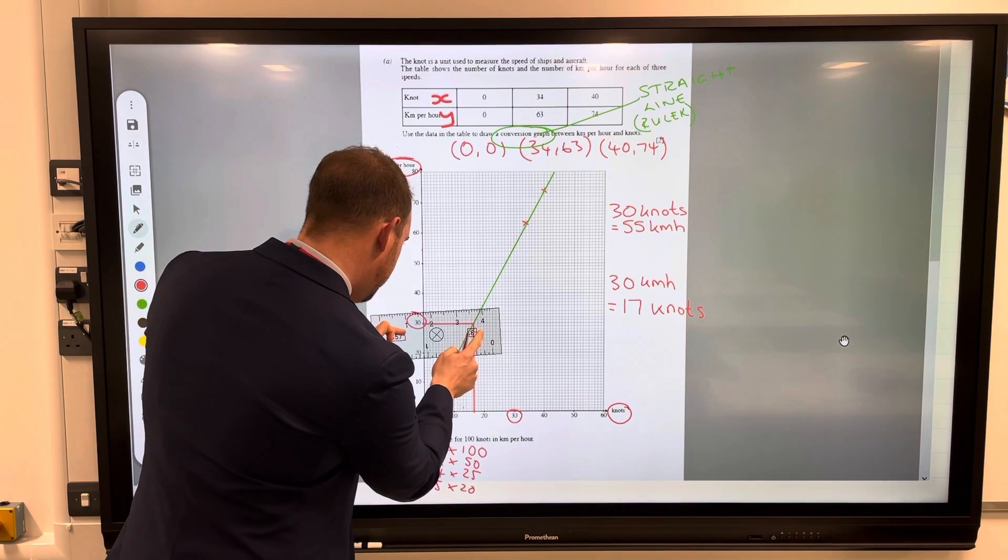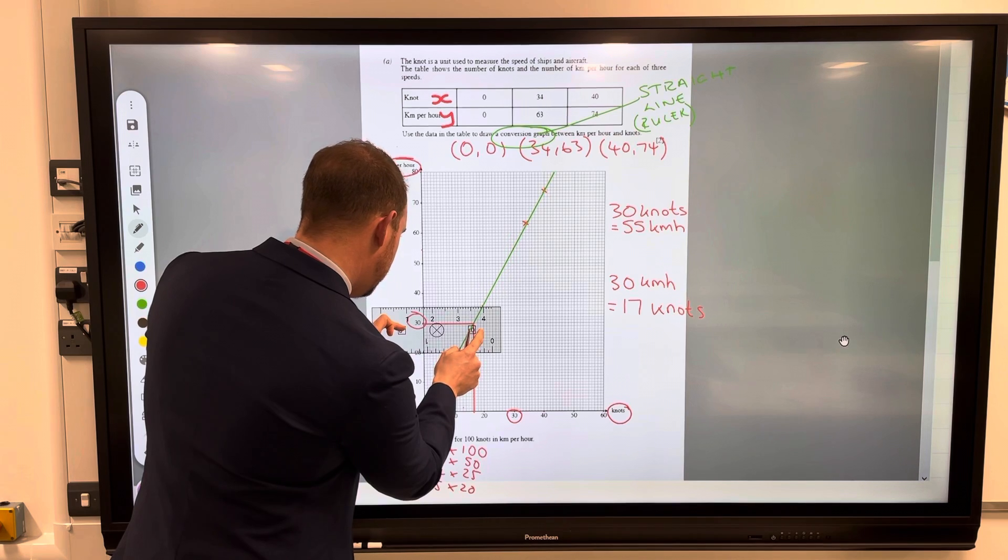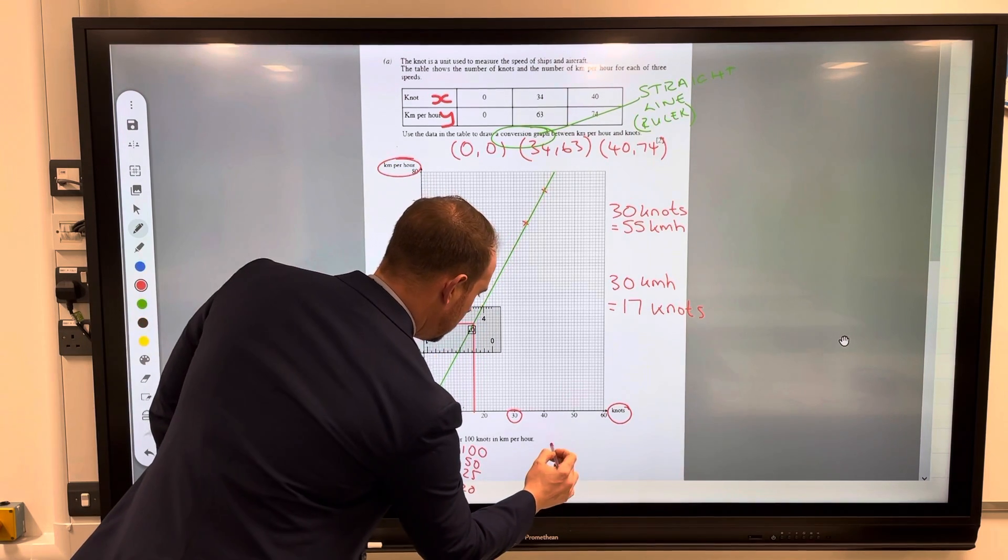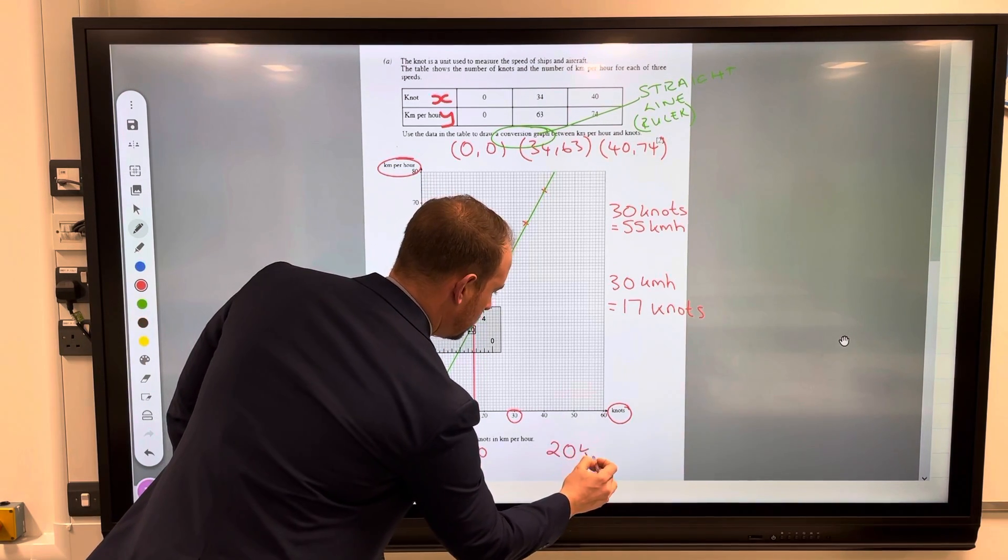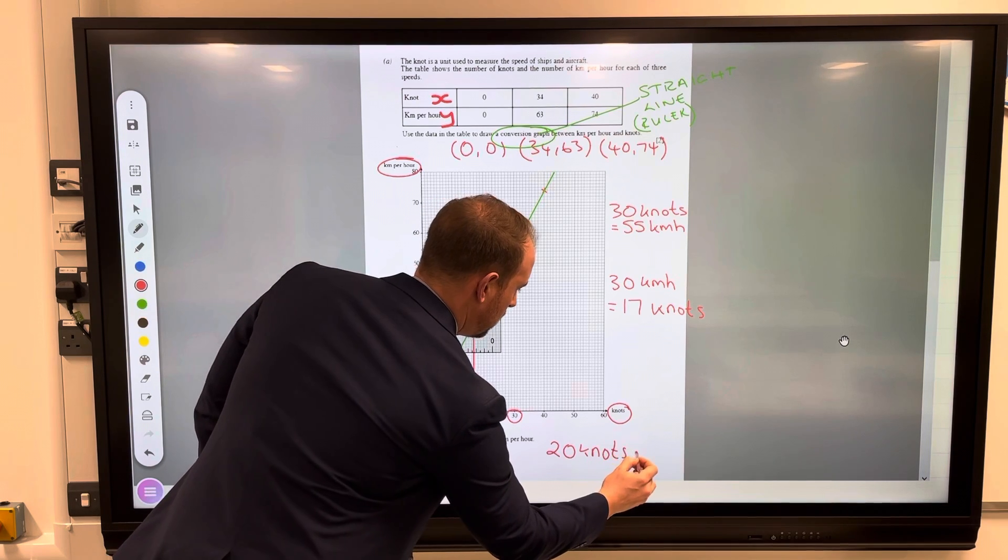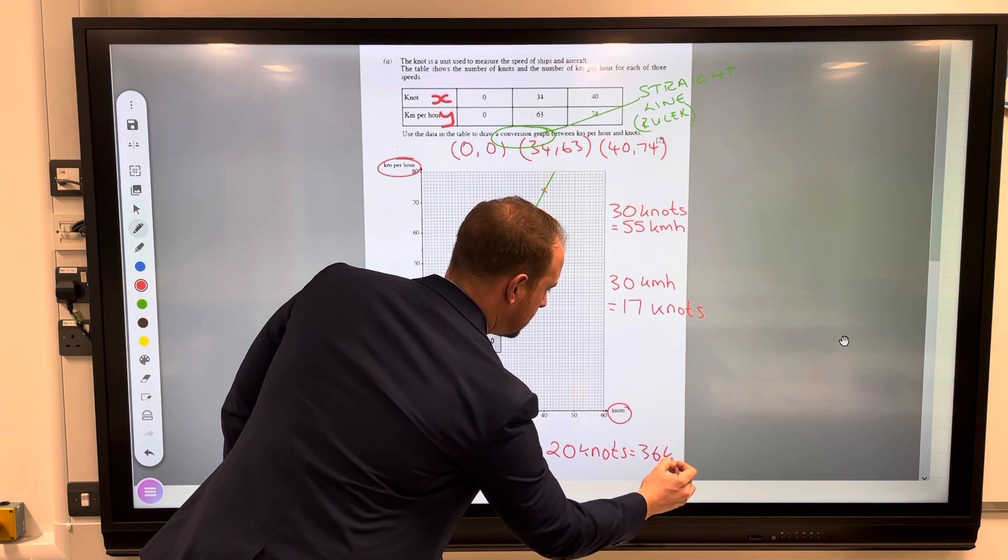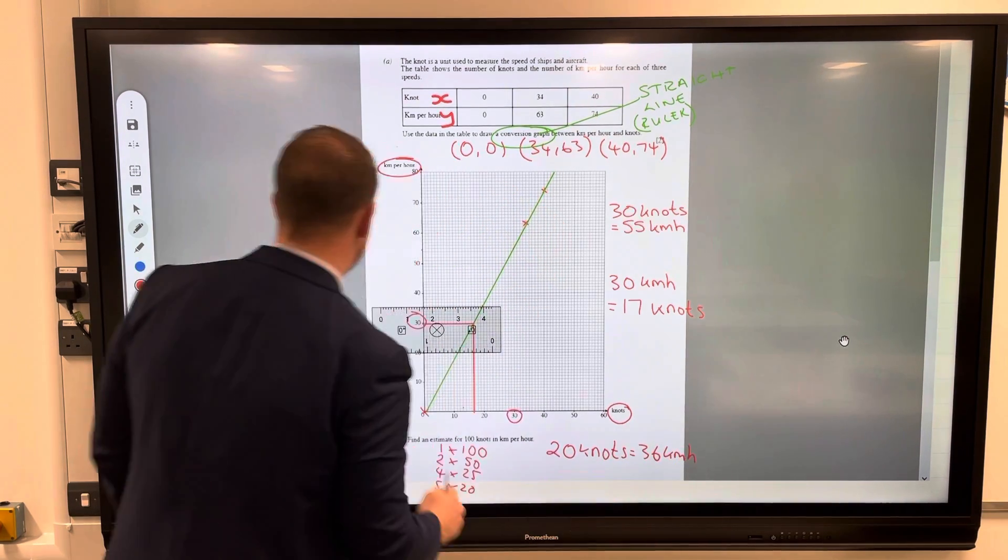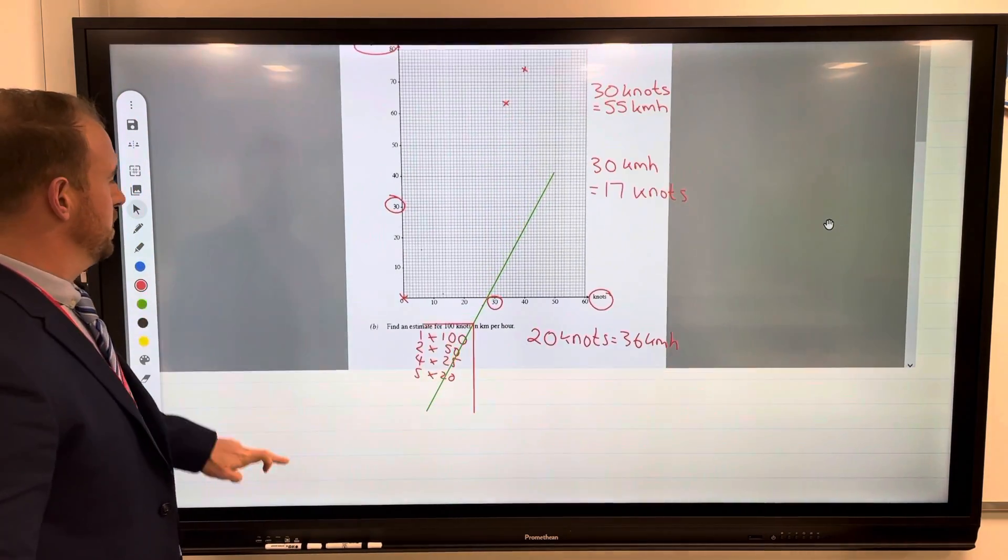20 up to the line which is there, go across to make 36. So we said 20 knots equals 36 kilometers per hour. Right, now a bit of math to work this out.